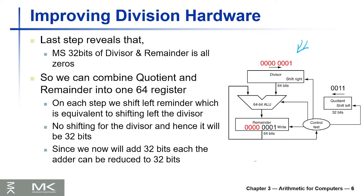The remainder register was 64 bits, and all the time whenever you use this circuit you're going to end up with the left half of that register all zeros. The divisor circuit is also 64 bits because we do shift right, and again the left half will be all zeros all the time — they are not used. We also have a quotient register of 32 bits to hold the quotient.